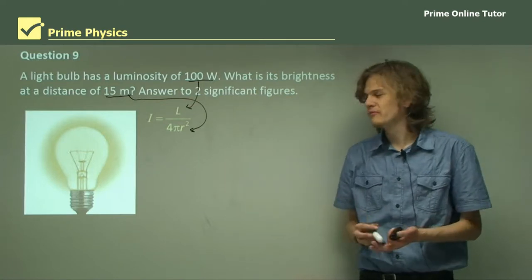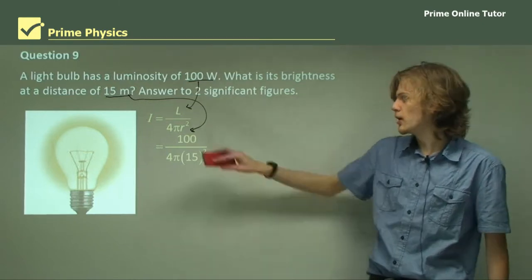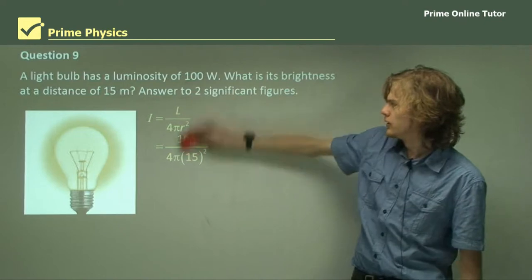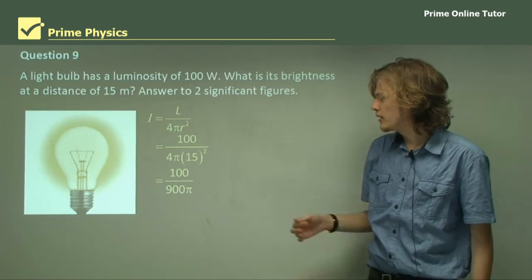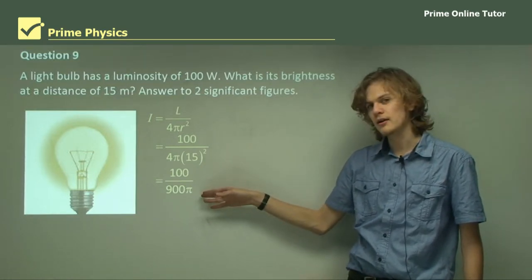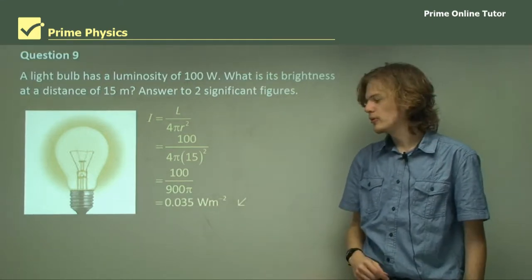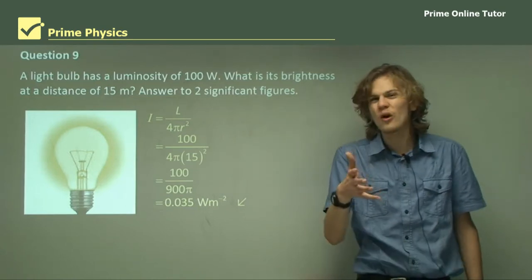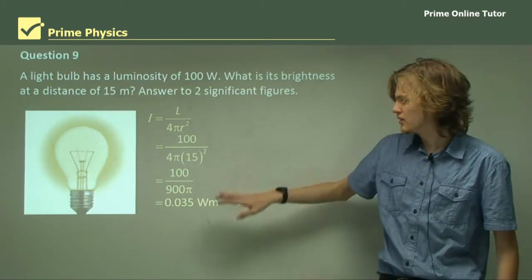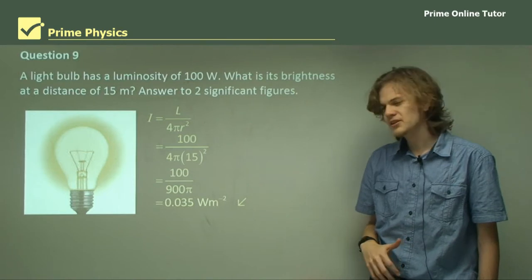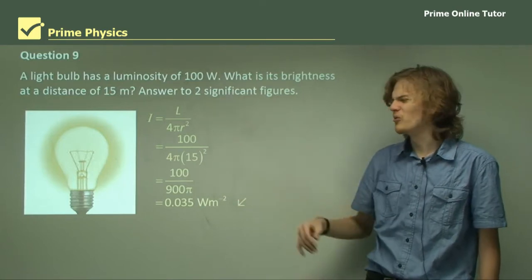Of course, we know the values of 4 and π. We substitute those in and get 100 over 4π times 15 squared. We can throw that into a calculator or simplify it a bit first. Either way, you end up with 100 over 900π, or 1 over 9π. This equals about 0.035 watts per meter squared. If we round to two significant figures, this is our answer. It's not a very high amount, but for a star, the luminosity tends to be a little more than just 100 watts.